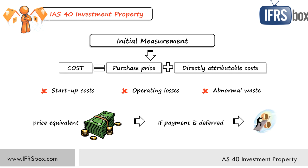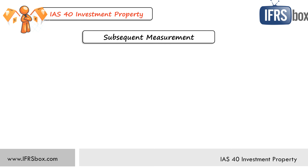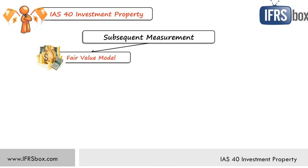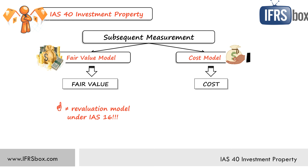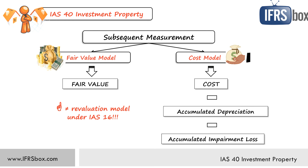How do we measure investment property subsequently — that is after the first reporting period? You have two options. The first option is to use the fair value model, where the investment property is measured at fair value. I'll talk about the fair value model in more detail in a bit. But note: the fair value model is not the same as the revaluation model under IAS 16 — many people get this wrong. The second choice is to apply the cost model, where you measure investment property at cost less accumulated depreciation less impairment loss, if any. You should use one model for all of your investment property, with some exceptions.